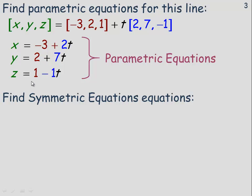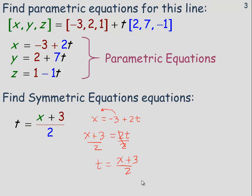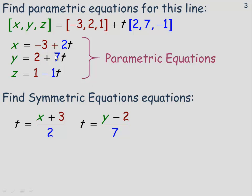To get the symmetric equations, solve each parametric equation for t. For the first one: x equals negative 3 plus 2t. Add 3 to both sides to get x plus 3 equals 2t, then divide by 2, giving t equals (x plus 3) over 2. For the second: bring the 2 over to get y minus 2, then divide by 7, so t equals (y minus 2) over 7. For the third: bring the 1 over to get z minus 1, then divide by negative 1.